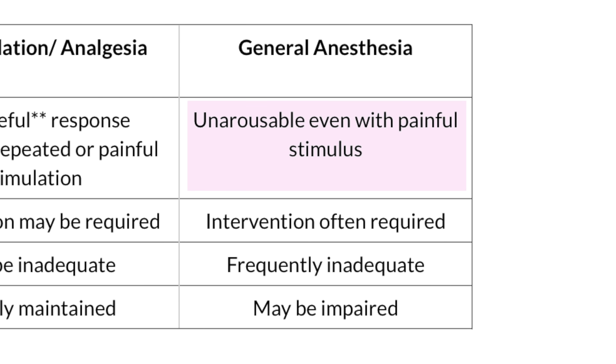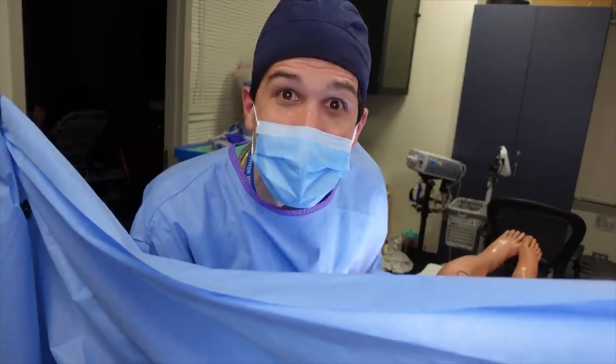A really subtle but important distinction here is talking about purposeful responsiveness. It is possible for a patient to be under general anesthesia and flinch very slightly if there is a painful stimulus — for example, an incision being made. This is actually a nidus of miscommunication in the operating room between anesthesiologists and surgeons, because if there is a little bit of non-purposeful movement under general anesthesia, a surgeon might think the patient is waking up, when in reality, based on parameters we're monitoring, the patient is definitely under general anesthesia and the movement was non-purposeful.